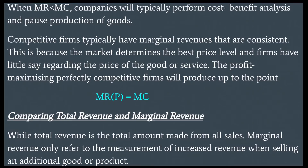Competitive firms typically have marginal revenues that are consistent. This is because the market determines the best price level and firms have little say regarding the price of the good or service. The profit-maximizing perfectly competitive firm will produce up to the point where MR — that is, price — equals MC.